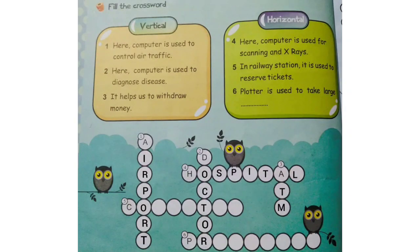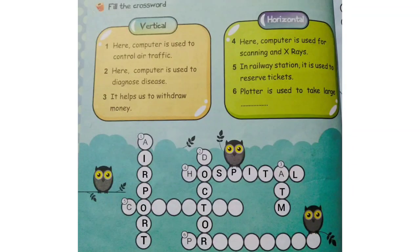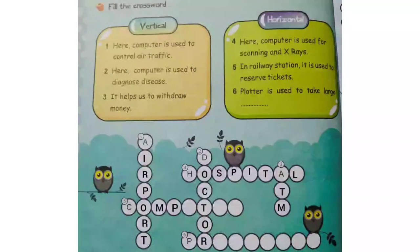Now let's look at the fifth question. In a railway station, a computer is used to reserve tickets. With the help of a computer, tickets are reserved at the railway station. So the spelling of computer — C-O-M-P-U-T-E-R. Computer.